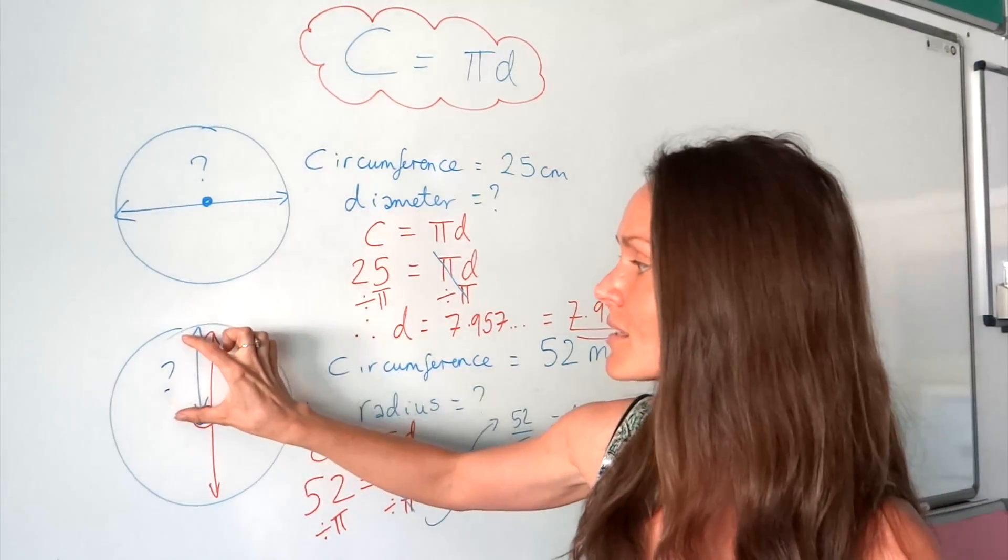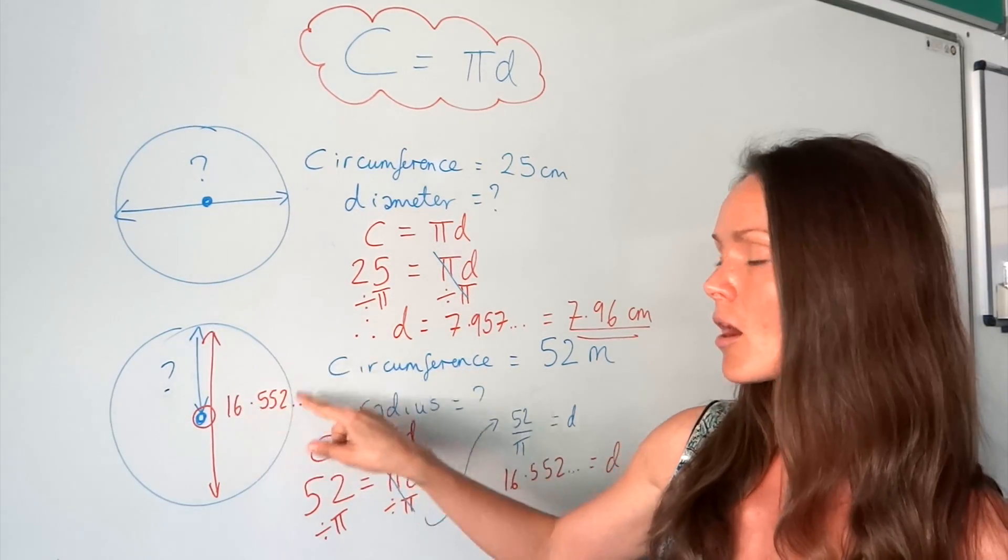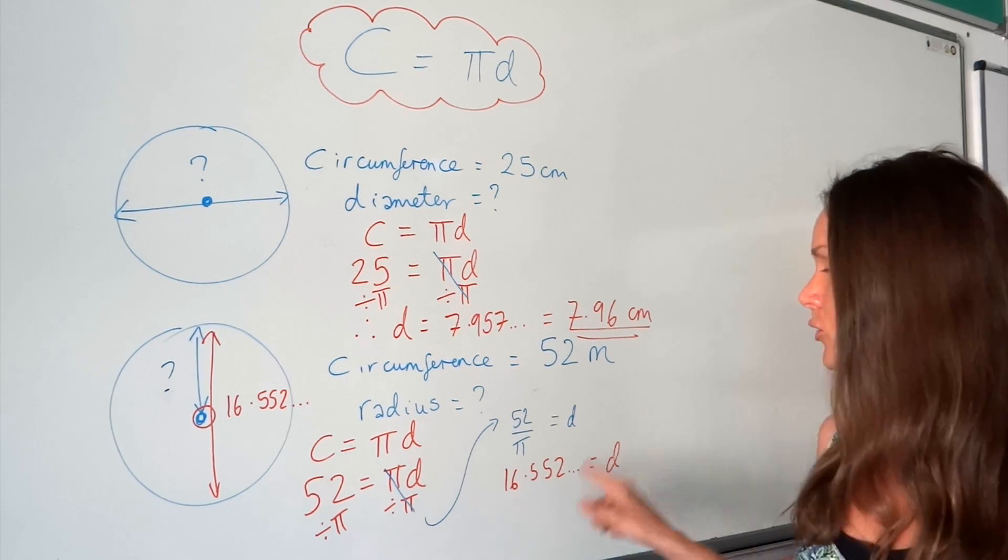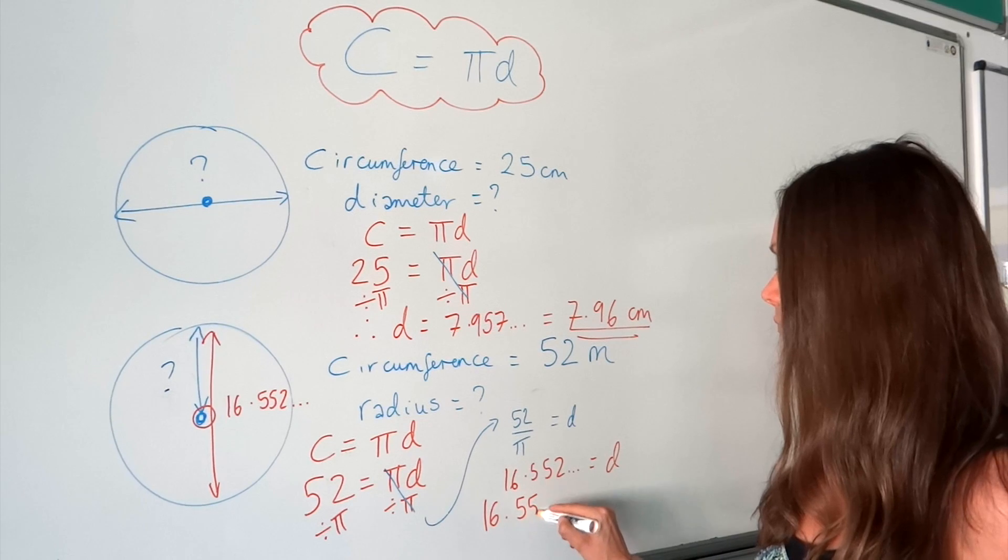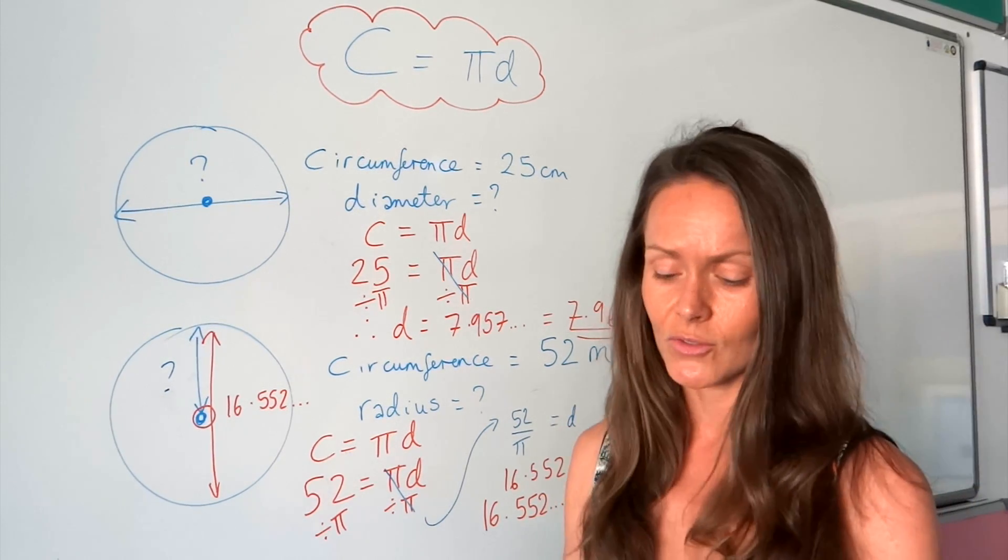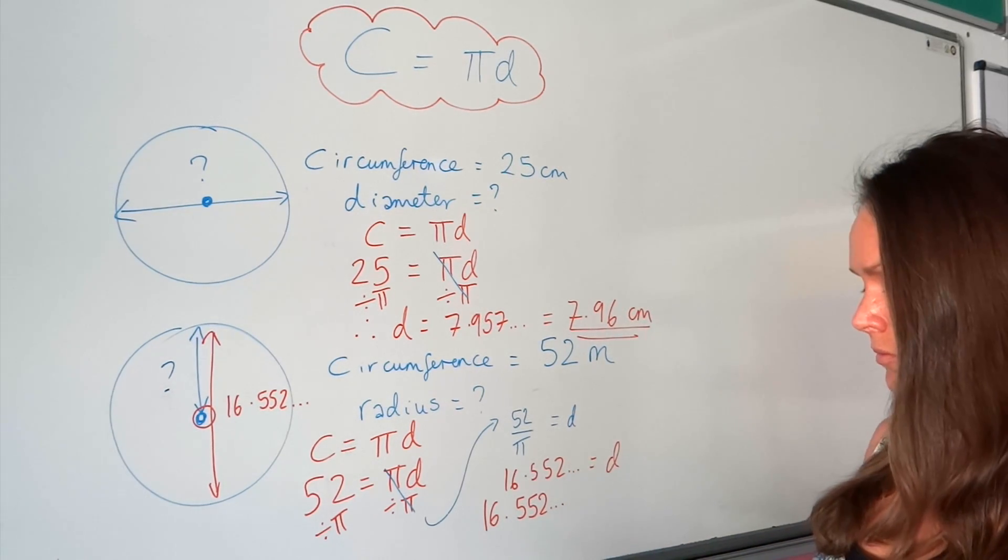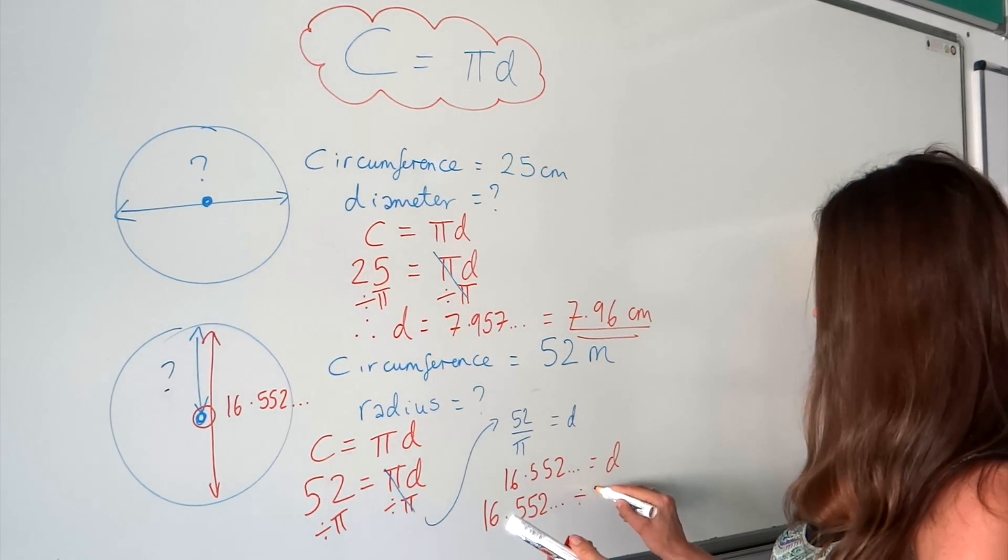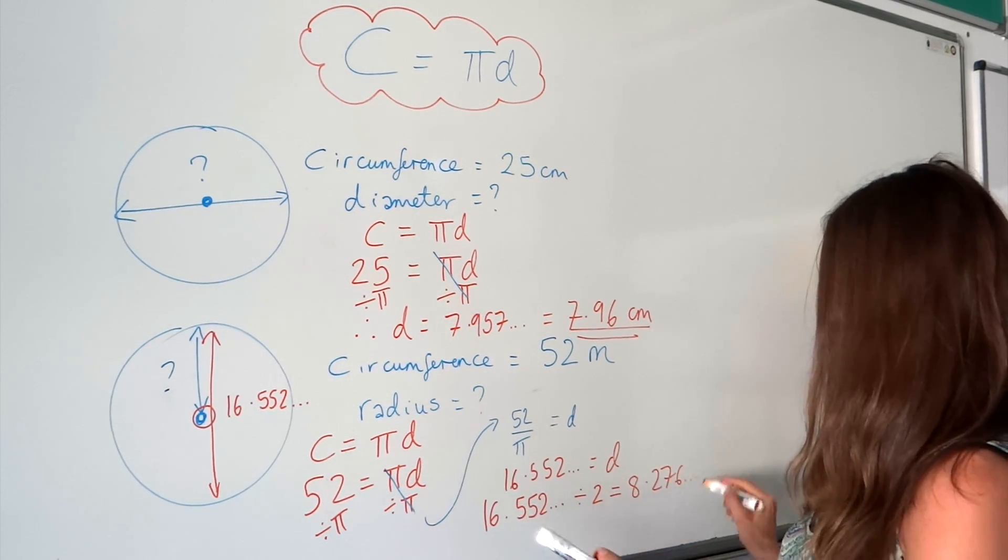That distance is 16.552... But we only want the radius, which is half of the diameter. So to get the radius, you just have to half this answer here. We're going to divide by 2. Leaving that answer on your screen, you're now going to divide that answer by 2. If you've left that answer on your screen, just press divide by 2 and then equals. It should give you 8.2760... And that is the radius.